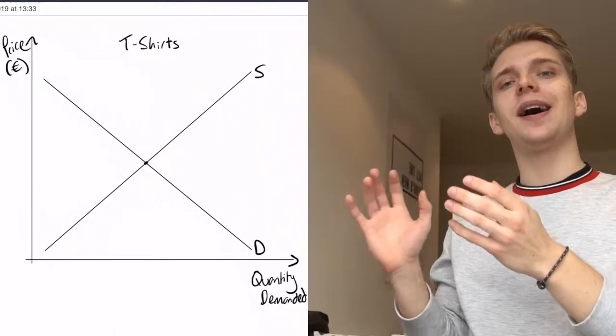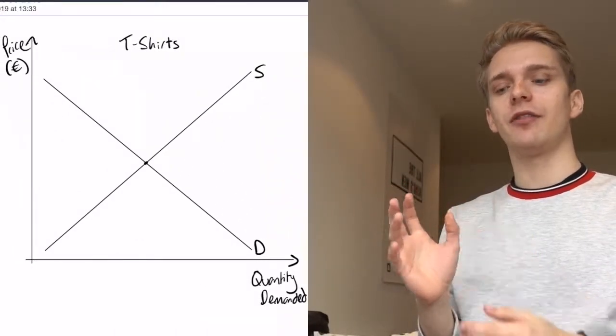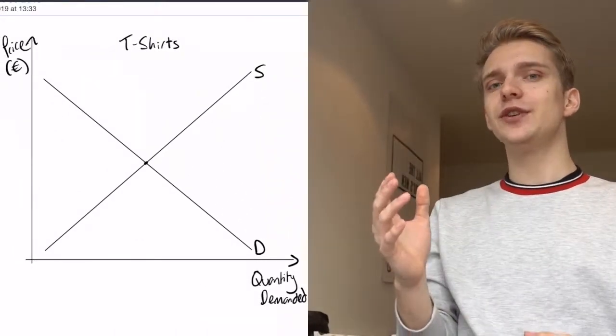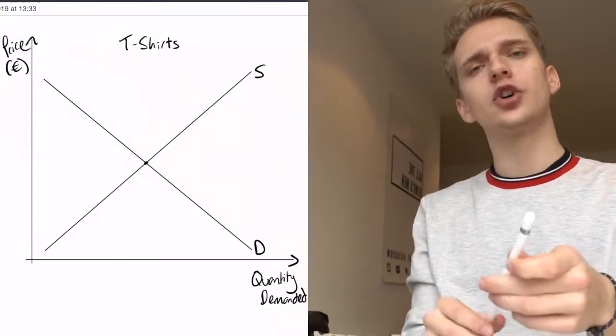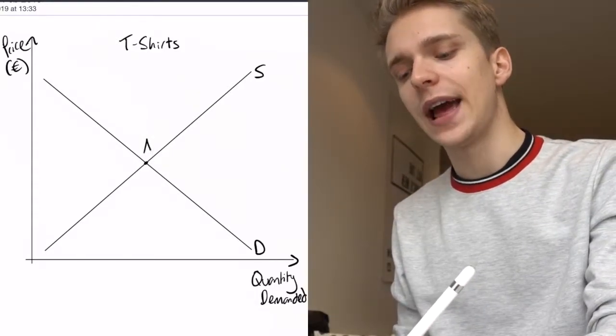If you remember from our first video, the demand curve is just a downward sloping straight line and the supply curve is just an upward sloping straight line. So let's put these two curves on the same graph and we can see how they interact. Here you can see the supply and demand on the same graph. The first thing you notice is that they intersect at one point — let's call that point A.